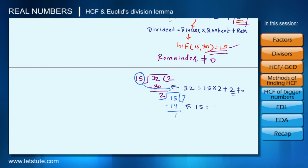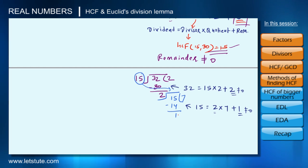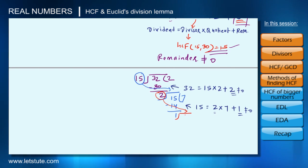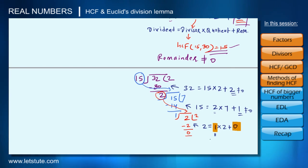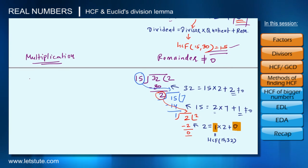We can write 15 = 2×7 + 1. Again the remainder is 1, not 0, so we still cannot take the divisor as the HCF. We repeat the step: take the found remainder as the new divisor and 2 as the new dividend, then divide 2 by 1. Here 1 goes 2 times with remainder 0. We write: 2 = 1×2 + 0. Since remainder is 0, the divisor 1 at this stage is the HCF of 32 and 15.